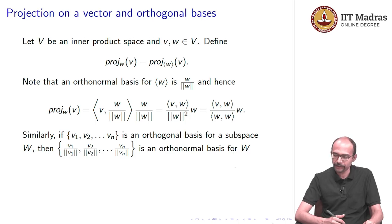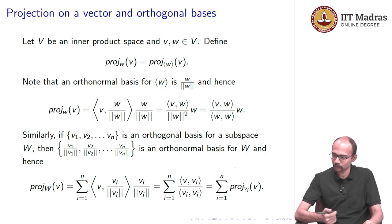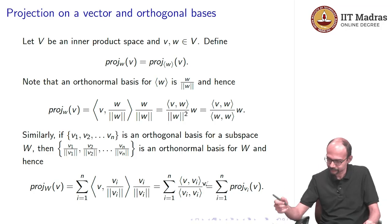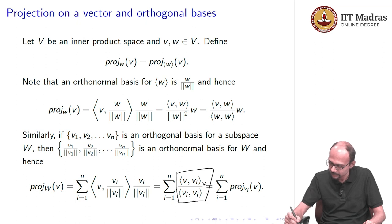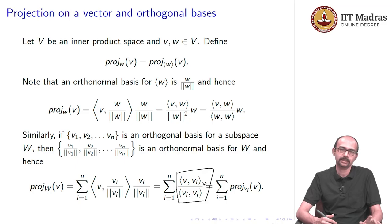If V1, V2, ..., Vn is an orthogonal basis for a subspace W, you can divide each by its norm to get an orthonormal basis. Then the projection of v onto W equals the summation of (inner product of v, Vi) divided by (inner product of Vi, Vi) times Vi, which is the sum of the individual projections of v onto each Vi. So with an orthogonal basis, the projection onto the subspace is just the sum of the projections onto each basis vector.